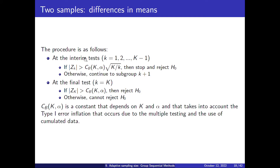The procedure is as follows. In the interim test, we compare the absolute value of Z_k with respect to some constant — specifically, C times the square root of the total number of stages divided by the current stage k. If it is larger than this, we decide there is enough evidence in favor of the new drug and we reject the null hypothesis. Otherwise we continue to the next stage.